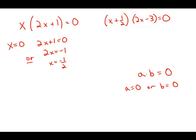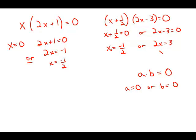Applying that logic to the second equation, the only way we'll get a product of 0 is if either x plus 1 half equals 0 or 2x minus 3 equals 0. So either x equals negative 1 half, or 2x equals 3, giving x equals positive 3 halves.